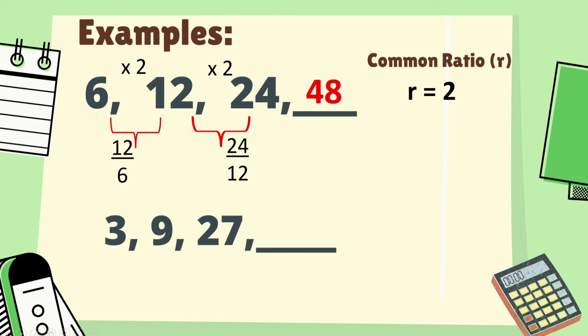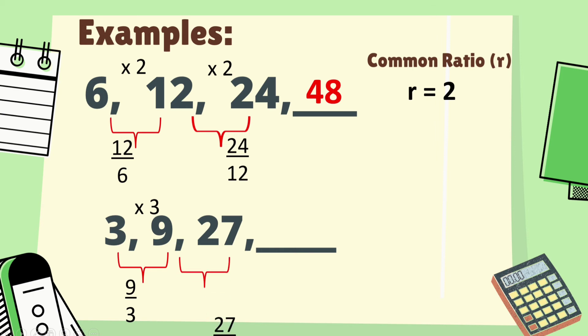The next term is 48, since we multiply by the common ratio. For the next example, 3, 9, 27: 9 divided by 3 is equal to 3, and 27 divided by 9 is also equal to 3. Therefore the common ratio is 3.